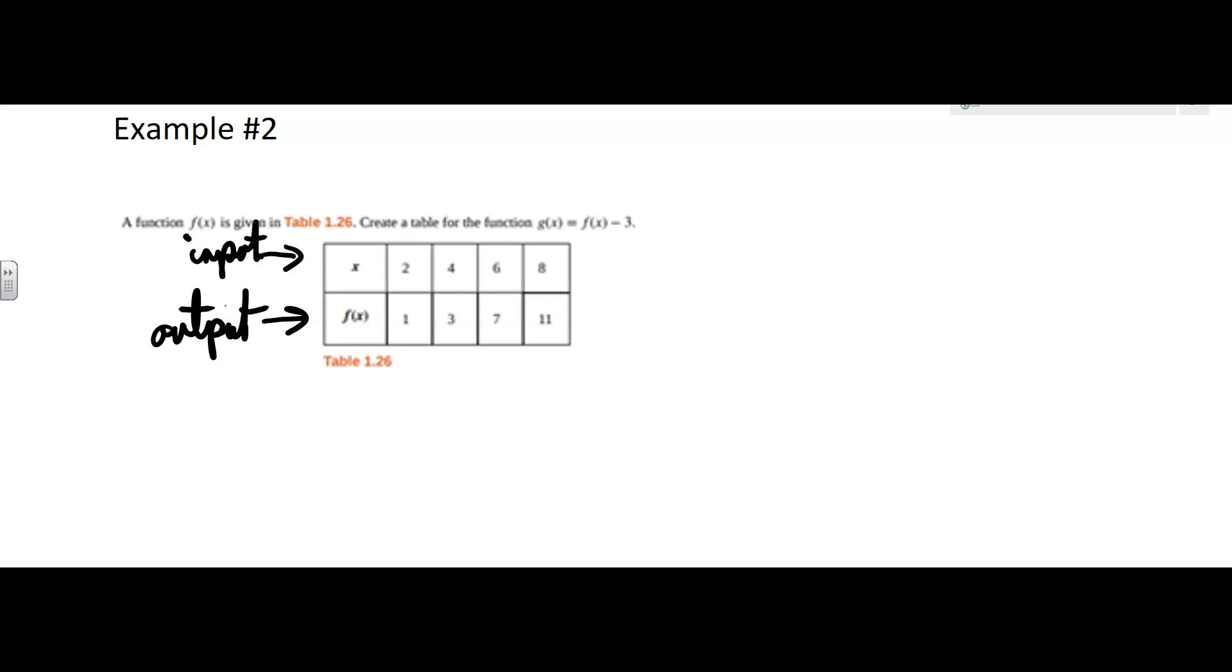That's what it's showing us for the table. Now we have to create a table for a new function, g of x. So I'm going to make a table. Here's going to be my x, and then here's going to be my g of x.